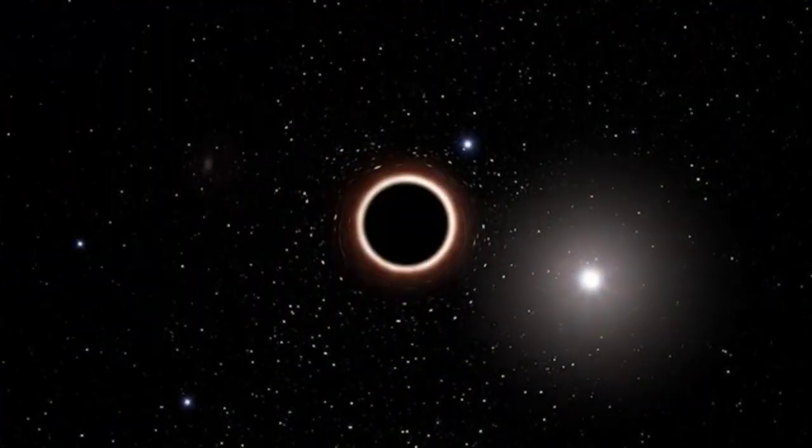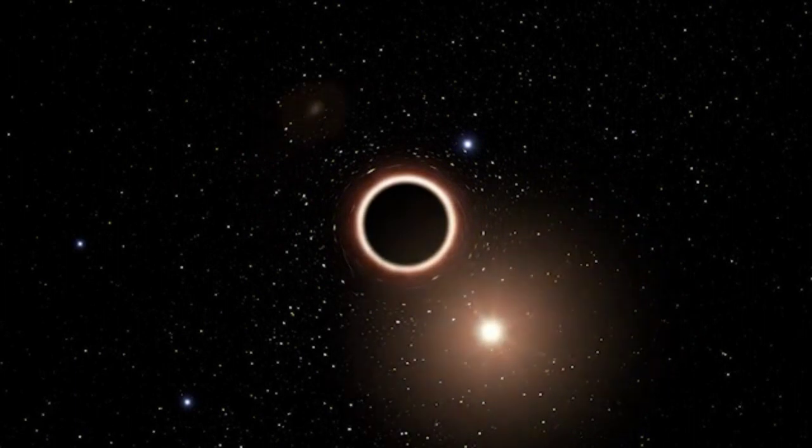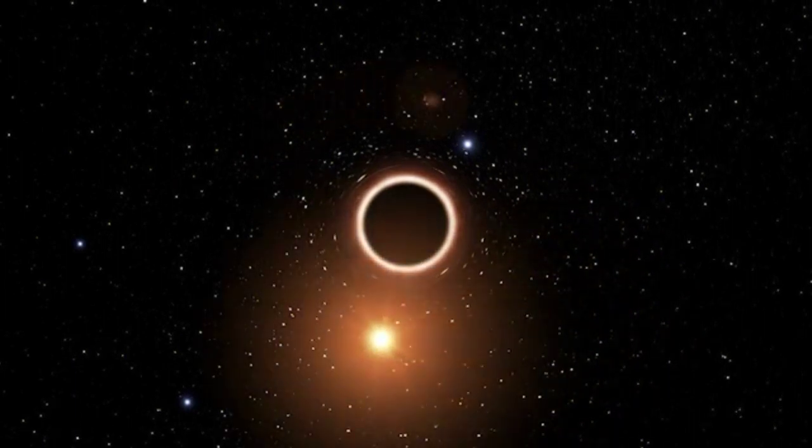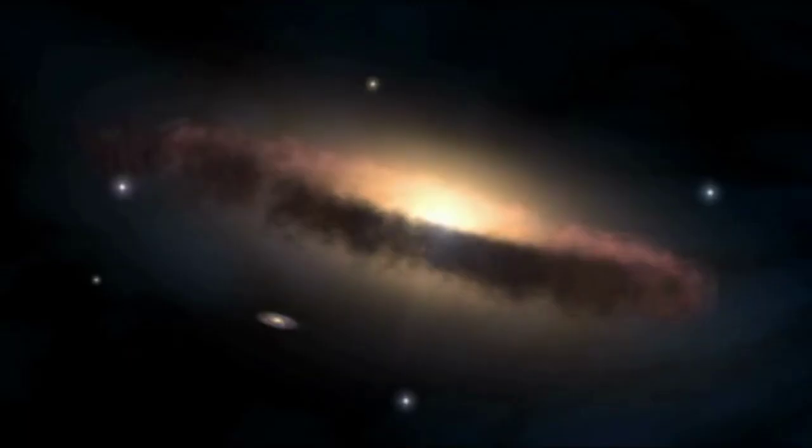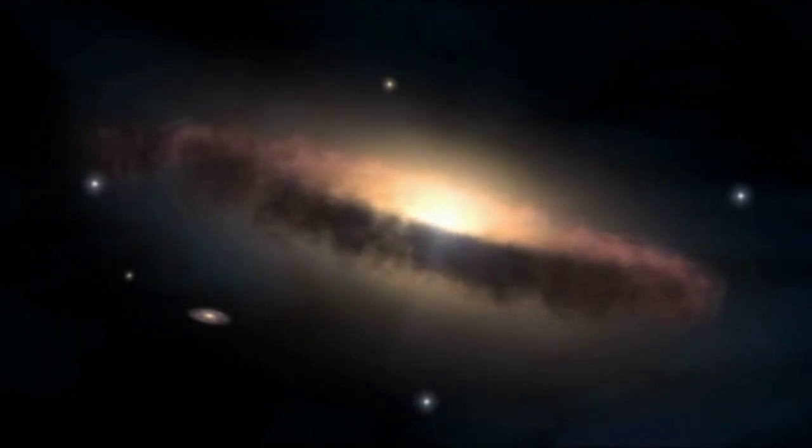So, an object close to a black hole will act exactly the same as if you swapped the black hole for a star of the same mass. In fact, it's perfectly possible to orbit a black hole. Not only that, but some scientists believe life could exist on planets orbiting black holes.